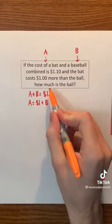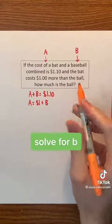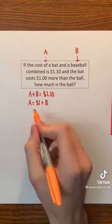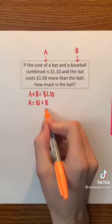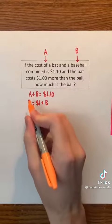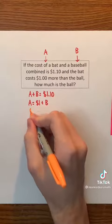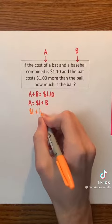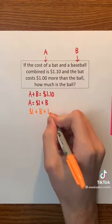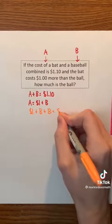To find the cost of the ball, we're going to have to solve for B by first substituting $1 plus B for A in the first equation, to get $1 plus B plus B equals $1.10.